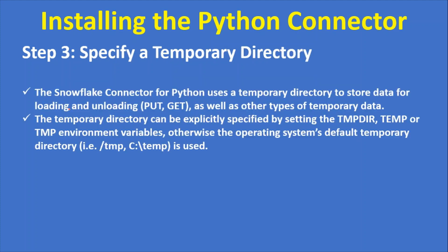The final step is to specify a temporary directory. The Snowflake connector for Python uses a temporary directory to store data for loading and unloading — such as PUT and GET operations — as well as other temporary data. By default, if you don't specify a path in your script, it uses the OS default. The temp directory can be explicitly set via the TEMP or TMP environment variables; otherwise the default is C:\temp on Windows or /tmp on Linux and macOS.